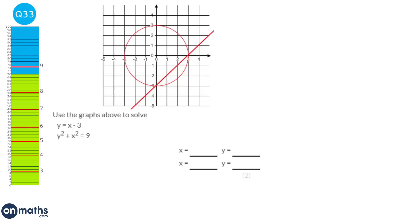When solving simultaneous equations drawn graphically, the solutions are just where the two lines cross. The first solution is x equals 0, y equals minus 3, and the second solution is x equals 3, y equals 0.